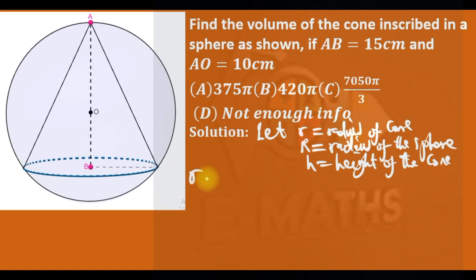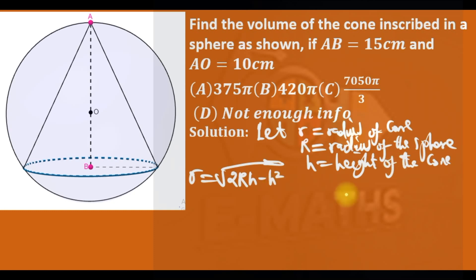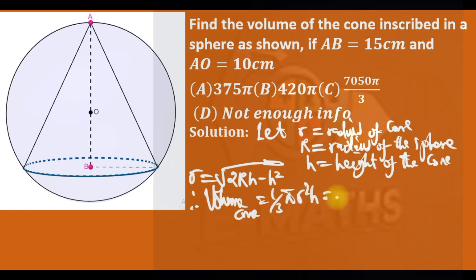The radius of the cone is always r = √(2RH − H²), where R is the radius of the sphere and H is the height of the cone. Therefore, the volume of the cone — we know volume of a cone is always (1/3)πr²H, where r is the radius of the cone and H is the height.